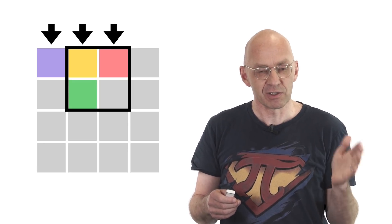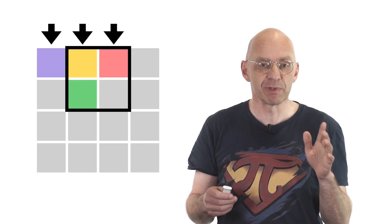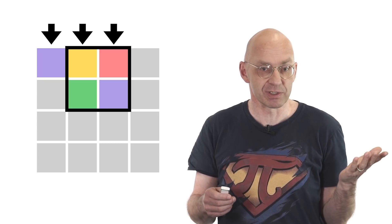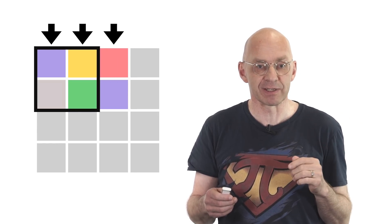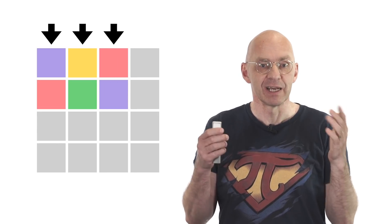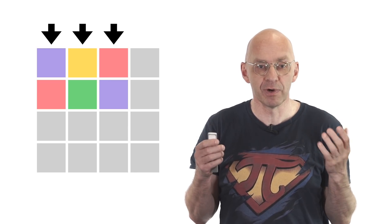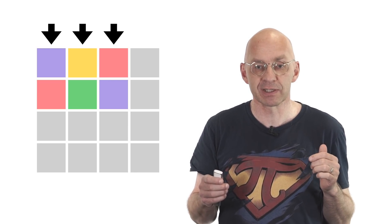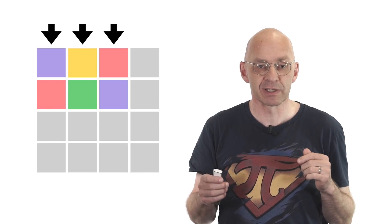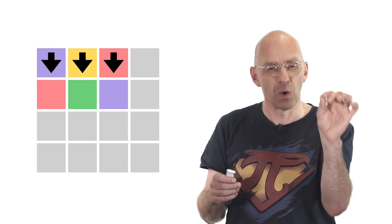Then the remaining gray in this 2 by 2 has to be purple, and the remaining gray in this 2 by 2 has to be red. So the three different neighboring colors in the top row force the colors of the three squares underneath. And notice those squares in the second row also have different colors.